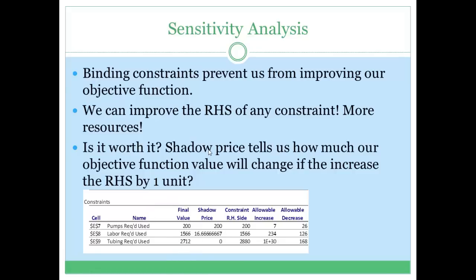Let's talk about shadow price. If we wanted to improve our objective function value, we could try to improve our binding constraints. What would happen if we were to increase the right-hand side of the first constraint by a single unit? Shadow price tells us exactly that. So if we increase the right-hand side of constraint 1 by 1 unit, our objective function value would increase by $200. If we increase it by 2 units, our objective function value would increase by 2 times 200, as long as these increases or decreases are within the allowable ranges listed.